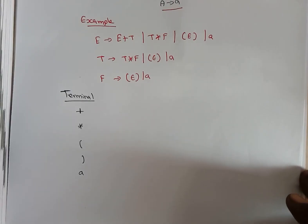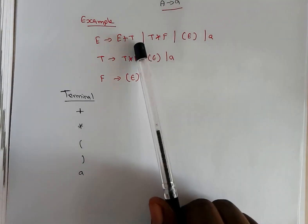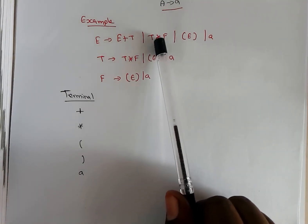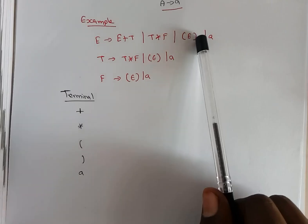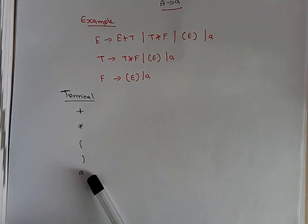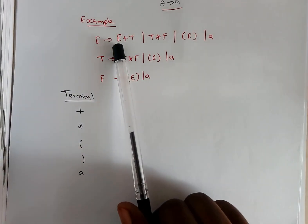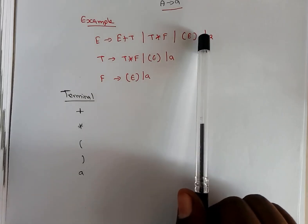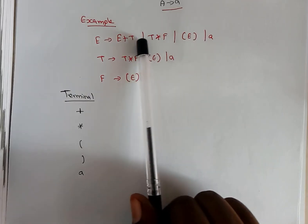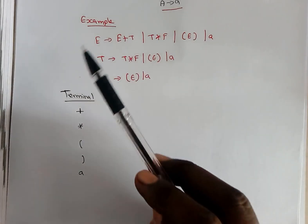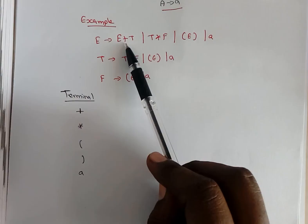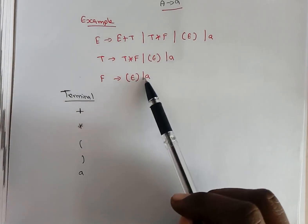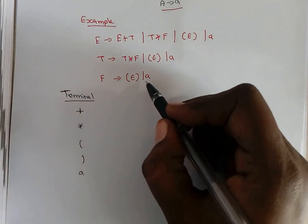These are all the terminal symbols in the given grammar: plus, t, star, f, open bracket, close bracket, and a. Now, when considering this grammar, plus, star, open bracket, and close bracket come in combination with a variable and a terminal symbol. But the terminal symbol 'a' always comes in a separate way — it is already in a prescribed format, as a variable tends to a single terminal symbol. This is allowed in the general format, so no need to assign a variable for 'a'.